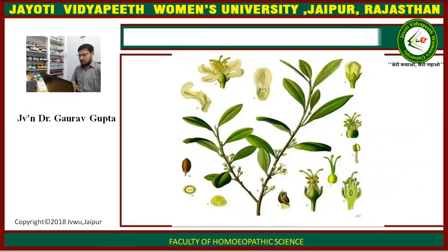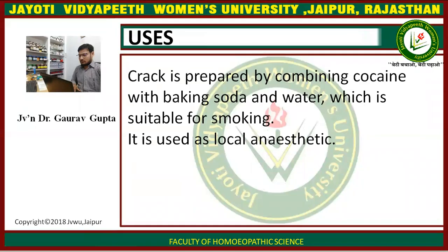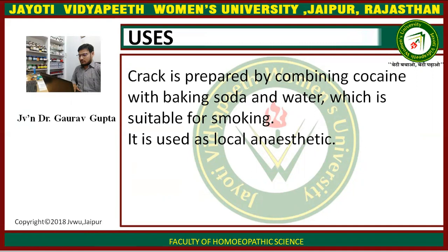These are the different parts of the plant, where you can see the leaves, the seeds, the flowers, and the pollen. Crack is prepared by combining cocaine with baking soda and water, which makes it suitable for smoking. Cocaine is used as a local anesthetic.